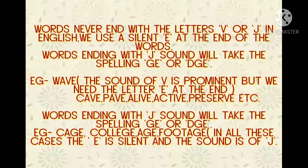The next fun fact is that in English, words never end with V or J. We use a silent E at the end of words ending with V. For example, Cave — C-A-V-E — the sound of V is prominent but we add an E which is silent. Words ending with a J sound will take the spelling of G-E or D-G-E. For example: Cage, Collage, College, Edge.